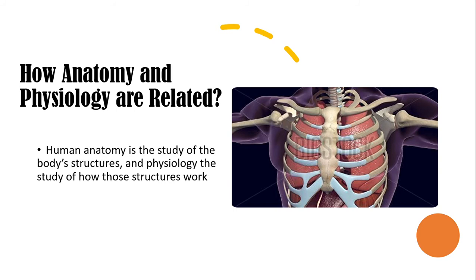Some of the main functions of the thoracic cage include protecting internal organs from injury — some of those organs are the lungs, the heart, and the liver. Also, the thoracic cage provides attachment for the upper limbs.